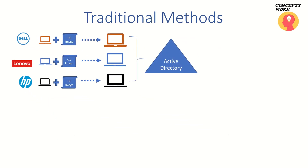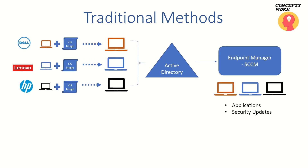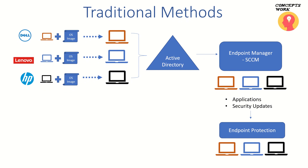The next step is to get these machines joined to Active Directory so the first layer of security — Group Policy Objects and restrictions — reaches these devices, and any user in Active Directory can use them. After that, devices get onboarded to an endpoint manager solution so the right applications, security updates, and patches are deployed. The fourth and most important stage is onboarding to an endpoint protection solution — AV, EDR, or similar.